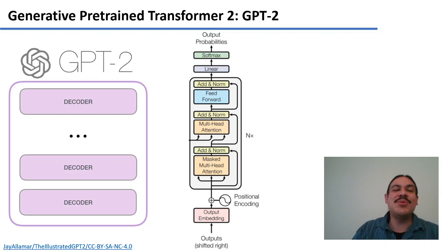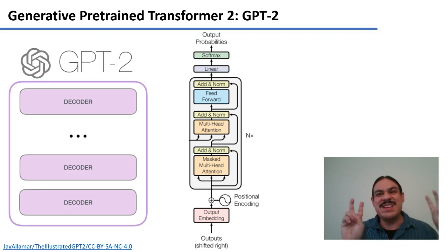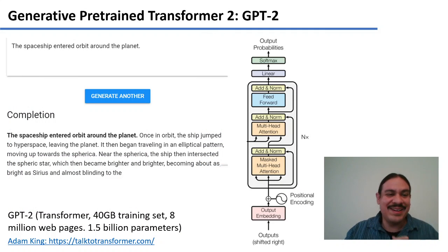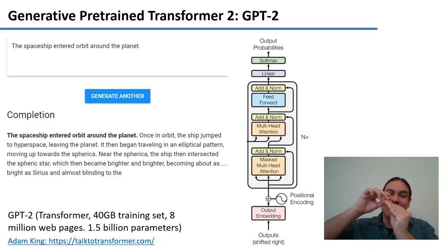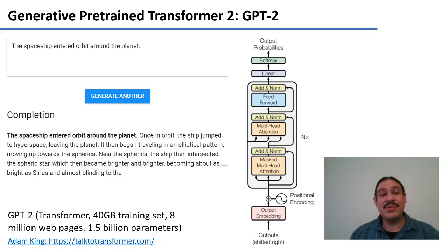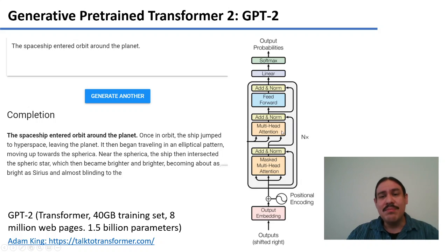A different type of transformer is the GPT-2. It only uses the decoder part. It is very good at generating predictions of what the next word will be. So if you give it 'spaceship entered orbit around the planet', it will then give you something like 'once in orbit', and so forth. You can experiment with the transformer there, and it's 40 gigabytes and 1.5 billion parameters in order to generate all these. It has multiple attention heads and numerous phases of this, so it's a very heavy model.